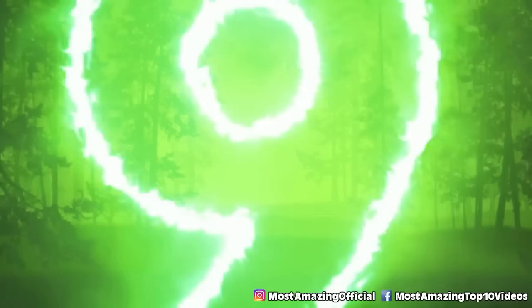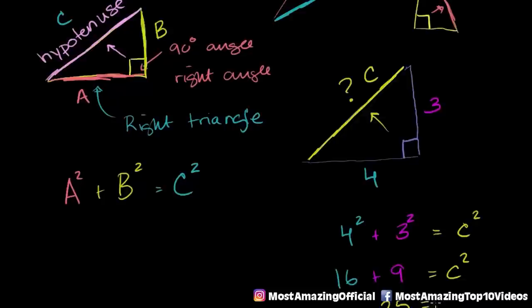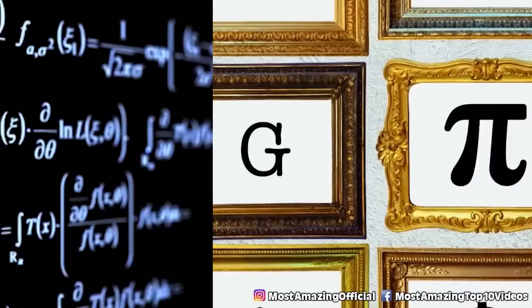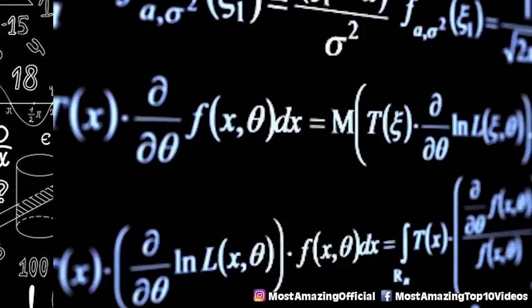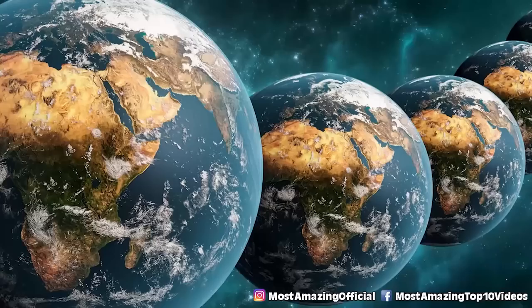Coming up in our number 9 spot, we have mathematical constants. Similar to that theory is the fact that everything in our known universe can be explained with mathematical equations — think the Pythagorean theorem. Scientists believe the structure of our universe can be broken down into mathematical structure, math without human baggage. They believe it is entirely possible that there are other universes based around different mathematical structures, each with their own laws and rules. So infinite mathematical structures means infinite universes — some being just slightly different, and some being totally, completely different.